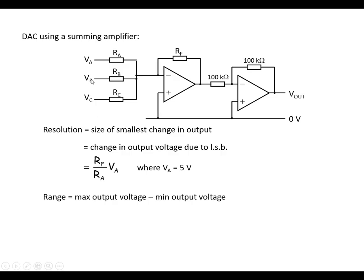To get the range, this will give us a maximum number equivalent to the number 7, so 1, 1, 1 will give us 7. So the output's going to be 7 times whatever the resolution is. Alternatively, we could set all of these equal to 5 volts and plug it into the formula.